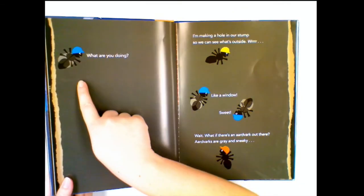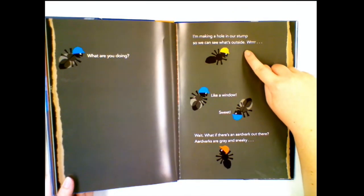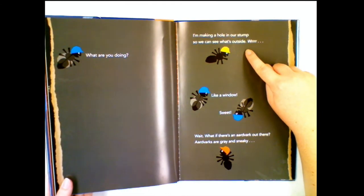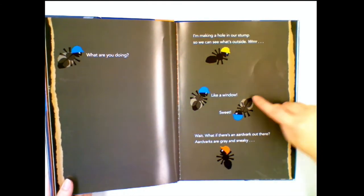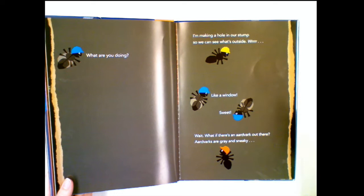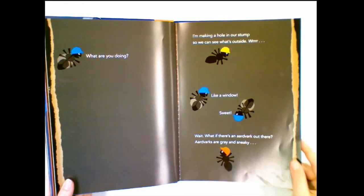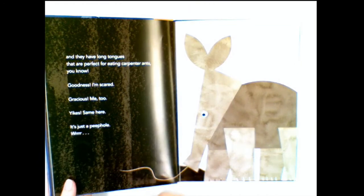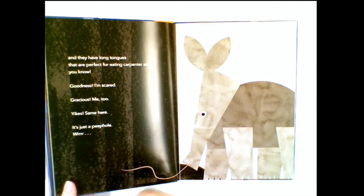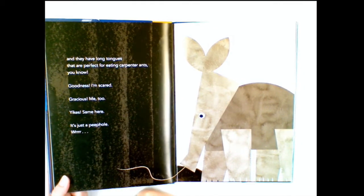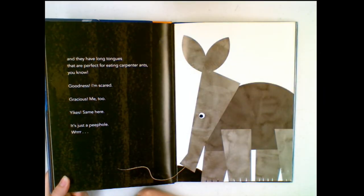What are you doing? I'm making a hole in our stump so we can see what's outside. Like a window. Sweet! Wait, wait. What if there's an Aardvark out there? Aardvarks are gray and sneaky and they have long tongues that are perfect for eating carpenter ants, you know? Goodness, I'm scared.